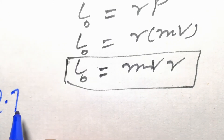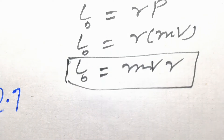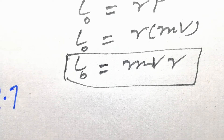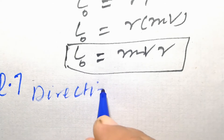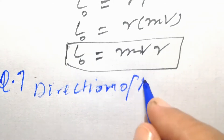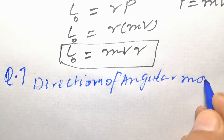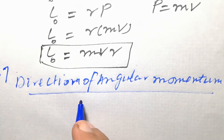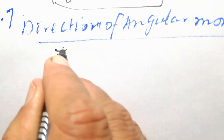Question 6 is not included. Question number 7 asks: number one — angular momentum, and number two — angular velocity. So now let's talk about the direction of angular momentum. We know that angular momentum L is equal to R cross P.